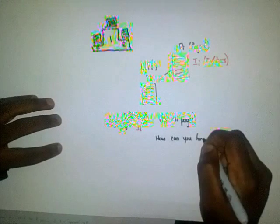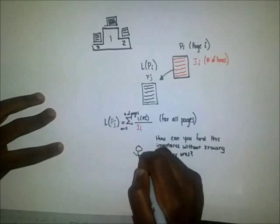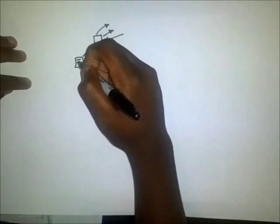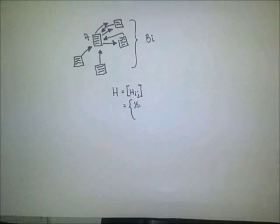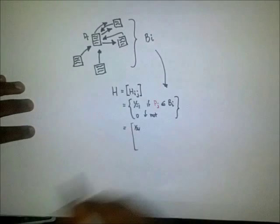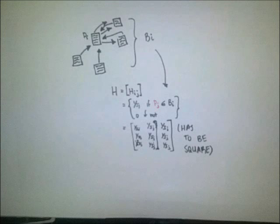How can you find the importance of a webpage before you know the importance of the other webpages? What came first, the chicken or the egg? It's simple — the web sorts itself out. We'll create a set B sub I, which contains all the pages linking to P sub I, and we'll create two matrices. One matrix is H, for which every entry in the i-th row and j-th column is 1 over L sub J, or 0 if page J is not in B sub I. Note that all the entries are non-negative and the entries in each column add up to 1. This is called a probability vector. Without going into too much detail, we basically have a guaranteed eigenvalue of 1.